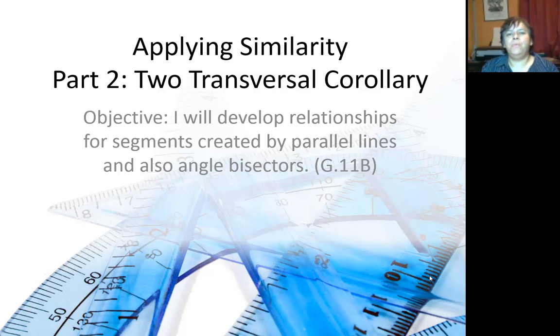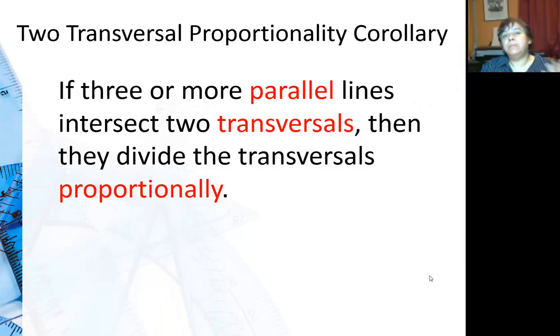When we had a triangle with a parallel line cutting it, it cut it into proportional pieces. What if we had three or more parallel lines intersected by two transversals? Do they divide the sides proportionally? They do.